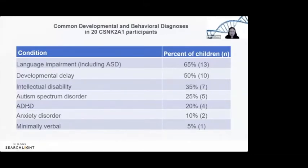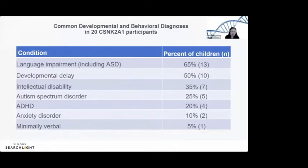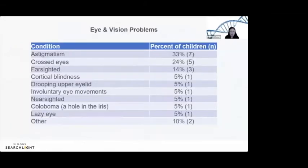In terms of cognitive capacity, younger children are classified as developmentally delayed and older children as having intellectual disability. The majority of individuals in our group had either developmental delay or intellectual disability — it's the most consistent feature we see across the cohort.